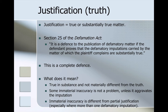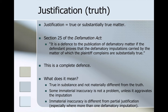Let's start with justification. Justification arises when the matter is true or substantially true, and it's contained in section 25 of the Defamation Act. It is a defence to the publication of defamatory matter if the defendant proves that the defamatory imputations carried by the matter of which the plaintiff complains are substantially true. This defence of justification or truth operates as a complete defence — it has to be true in substance and not materially different from the truth. Some immaterial inaccuracy is not a problem unless it ultimately aggravates the imputation. Immaterial inaccuracy is different from partial justification, especially where there is more than one defamatory imputation.